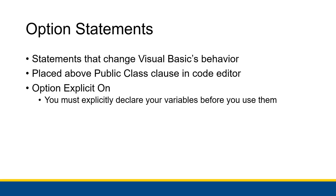The first option is Option Explicit On. When you type that, it tells Visual Basic that you must explicitly declare your variables before you use them. If you say Option Explicit Off, Visual Basic might try to infer that it hasn't seen a variable before and create a new one. If you accidentally mistype a variable name in an assignment statement, the value goes into a new misspelled variable instead. So you should always use Option Explicit On.